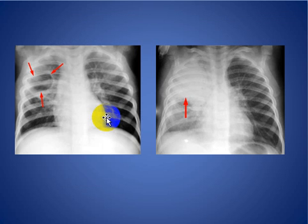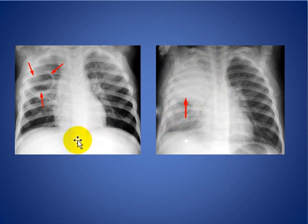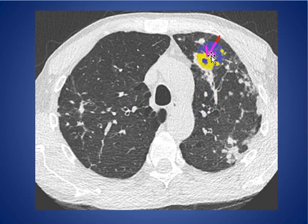Here is another patient — a child — with consolidation in the right upper lobe. After one week of treatment, this resulted in a pneumatocele. Here is a patient with TB showing a thick-walled cavity in the right upper lobe.